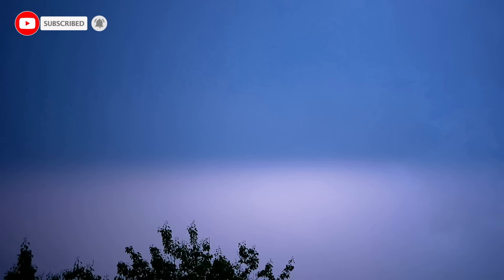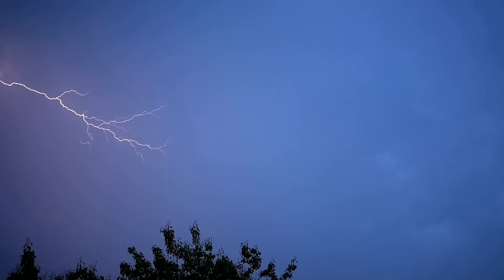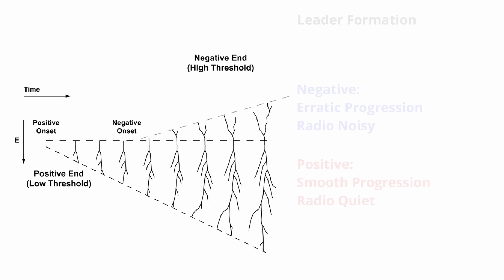In conclusion, the intricate dynamics of atmospheric electricity reveal a fascinating order within the seemingly chaotic dance of lightning. The dual-ended tree structure with positive and negative leaders exhibiting distinct behaviors underscores the nuanced interplay between positive and negative potentials. Positive leaders characterized by smooth progression and radio quietness contrast with the erratic and radio noisy nature of negative leaders.